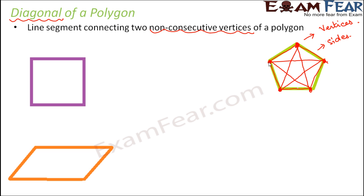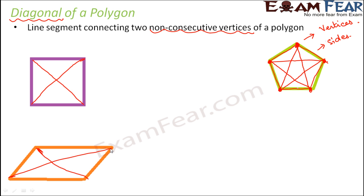Let's look at some examples. In the case of a square, you can have a diagonal like this, and also a diagonal like this. So these are the two possible diagonals for a square — you cannot have more than two. Similarly, in a parallelogram, this would be one diagonal and this could be another diagonal. Here also you can have a maximum of two diagonals, not more than that.